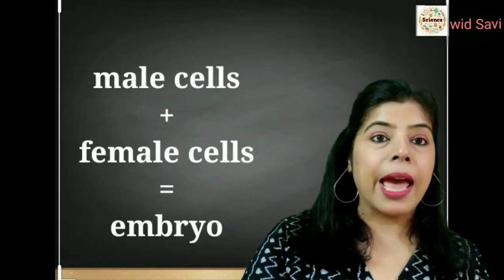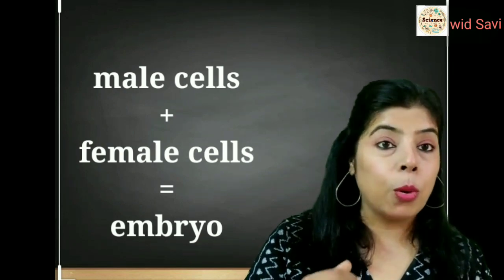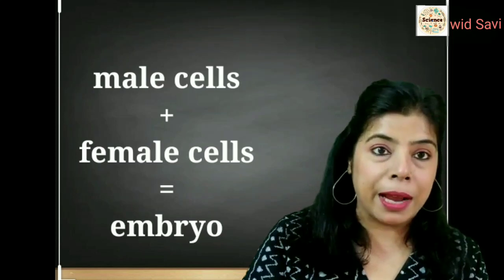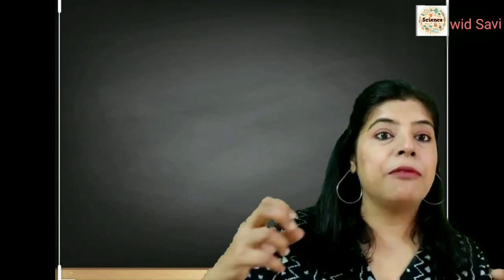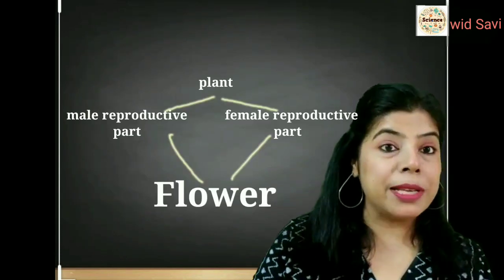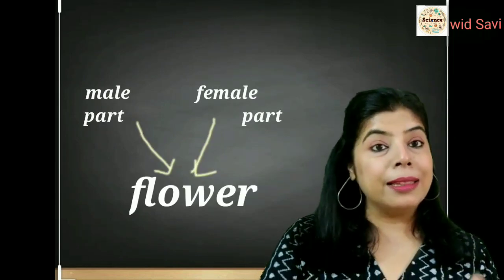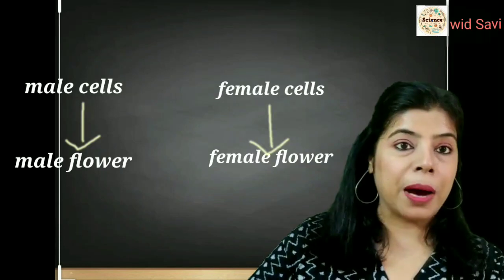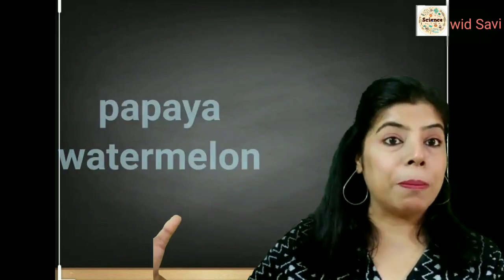The flower contains a male reproductive part and a female reproductive part. When the male cells and the female cells fuse together, only then we get an embryo — a baby plant — or in the case of animals, a baby animal. So that fusion of the male and female cells is very important. In some cases, some plants have the male and female reproductive parts in the same flower. In some plants, the male and female reproductive parts are in different flowers — one is a male flower, the other is a female flower. This happens in the case of papaya and watermelon.